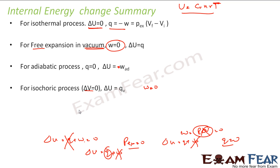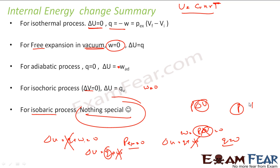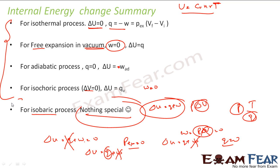The last case is the isobaric process. For an isobaric process, there is nothing special — pressure is constant, but delta V can have some value, so work done will be present. Q can also have some value. So delta U = Q + W, just the general formula. There is nothing special to simplify in this case.